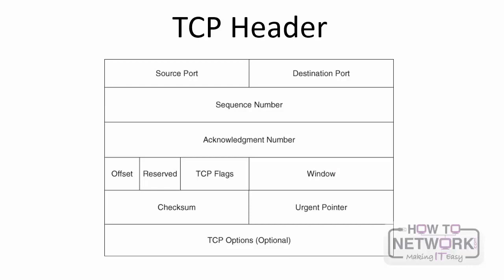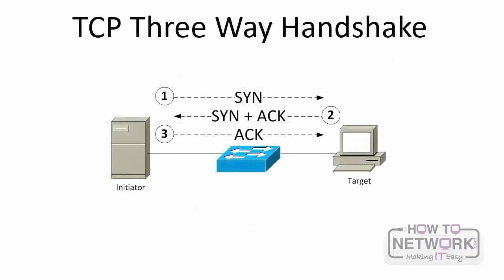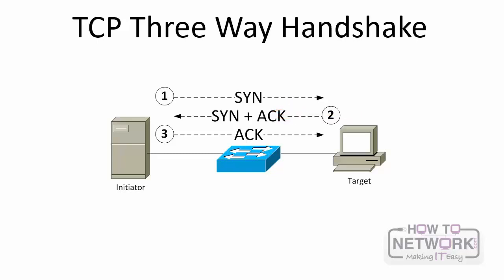The process of setting up a TCP session involves a three-way handshake. Step one: the session initiator sends a SYN packet to the target host. Step two: the target host acknowledges receipt of the SYN message and sends back an ACK as well as its own SYN message. Step three: the session initiator receives the SYN from the target and acknowledges receipt by sending an ACK message — a TCP session is now established. You need to know each of these three steps for your exam.